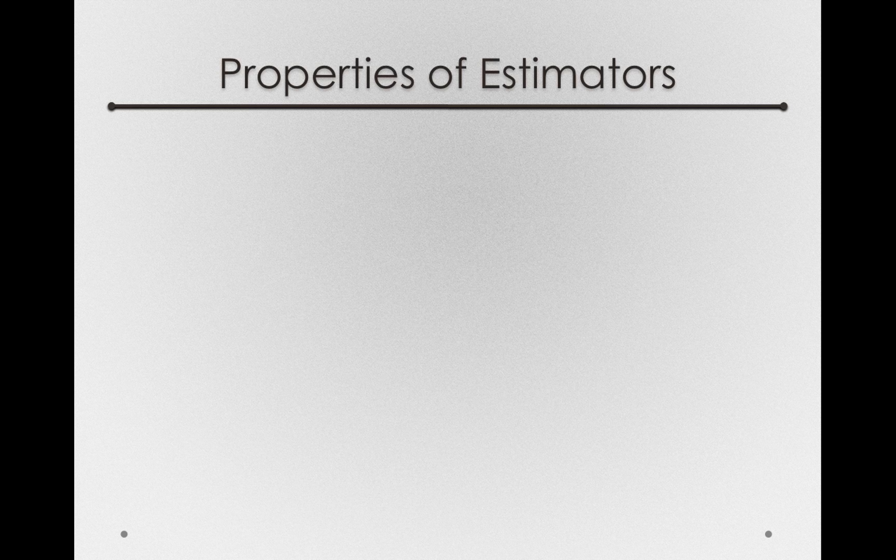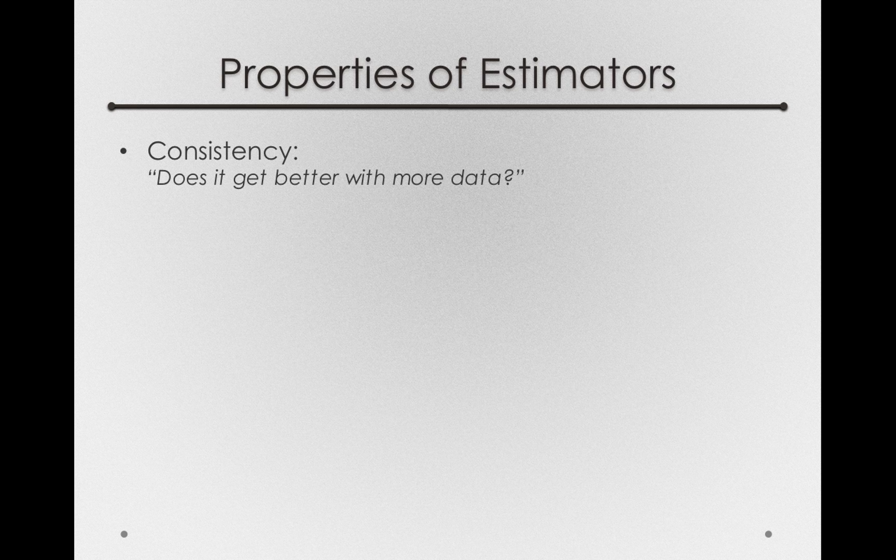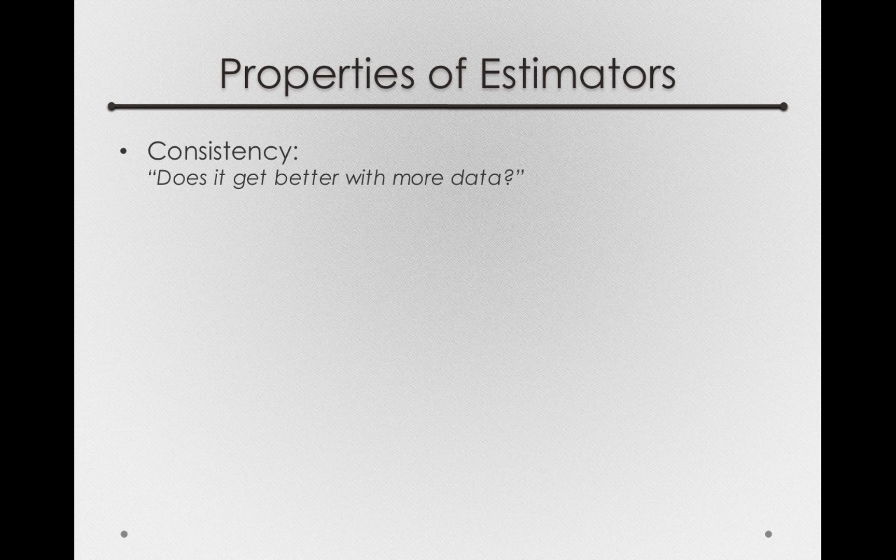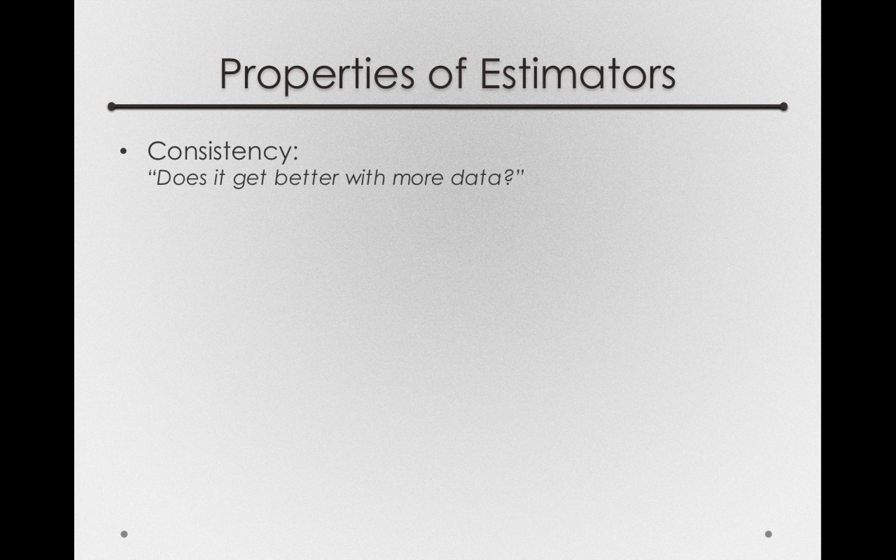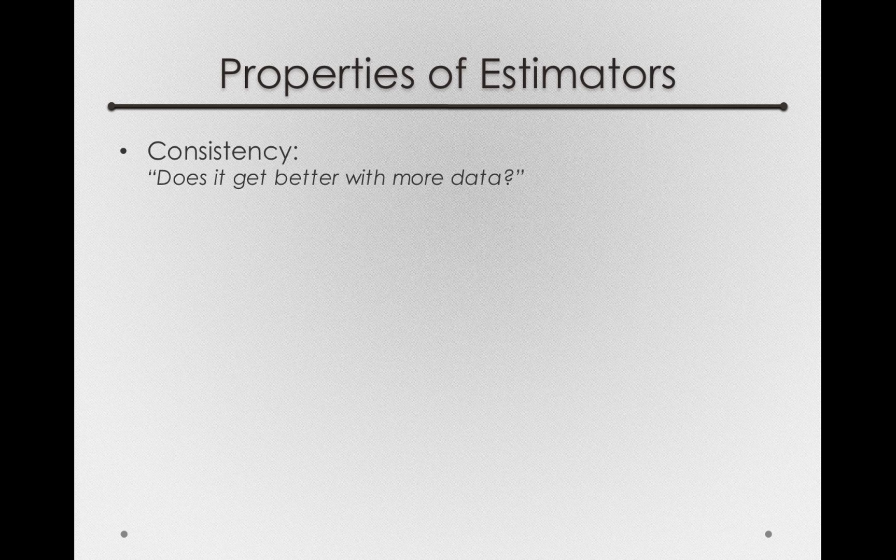The properties we hope estimators have start with consistency. We hope that all of our estimators and statistics are consistent statistics, which means that they get better when we have more data. This should be a pretty obvious property. If we have a sample of 100 people and a sample of 10 people, a consistent estimator will be more accurate with 100 people than with 10 people.